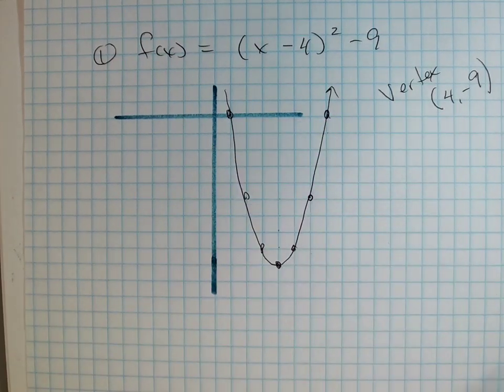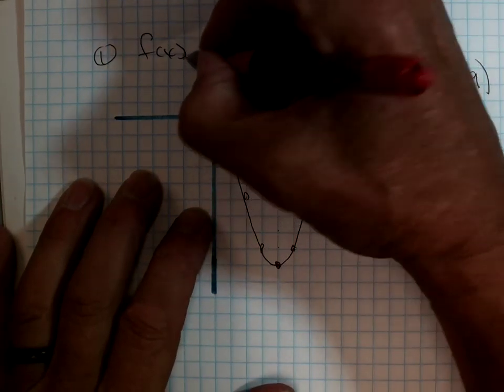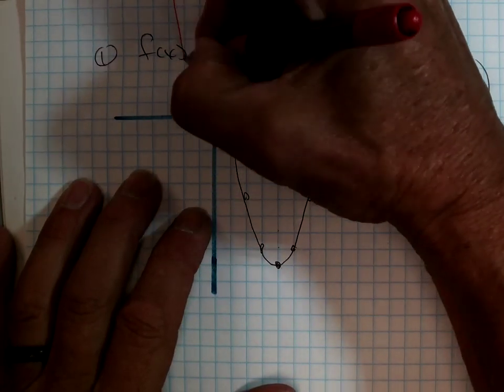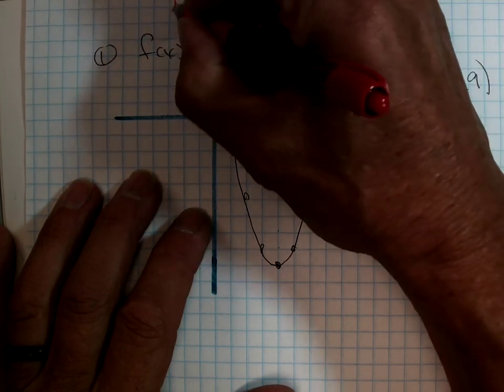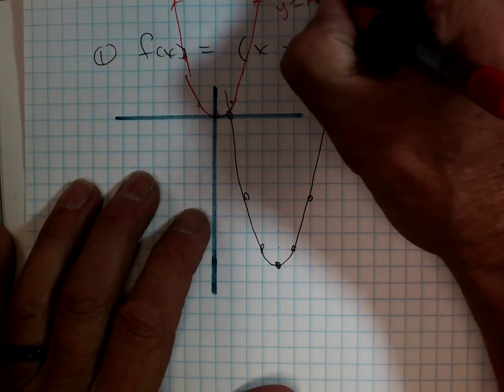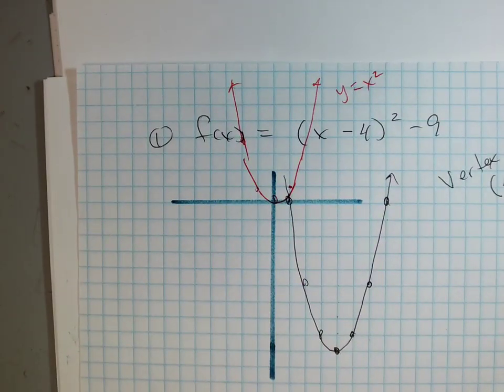So, the parent function is regular old y equals x squared, and the parent function, we need both, which is the regular parabola, right? There's my y equals x squared. Okay. Thumbs up? Thumbs up? Pretty good.